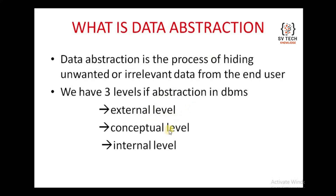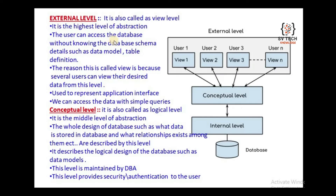The 3 levels are: external level, conceptual level, and internal level. Here we can see the diagram related to the levels of abstraction. The external level is also called as view level, because it has view 1, view 2, view 3 — the end user is the viewer of this level — so it is also called as external schema. External level is the highest level of abstraction, conceptual level is the middle level, and internal level is the lowest level of abstraction.